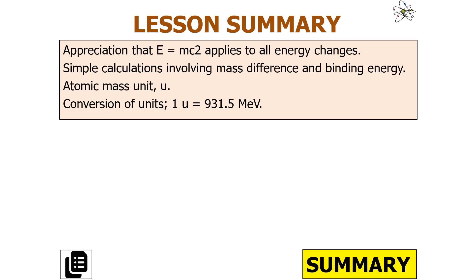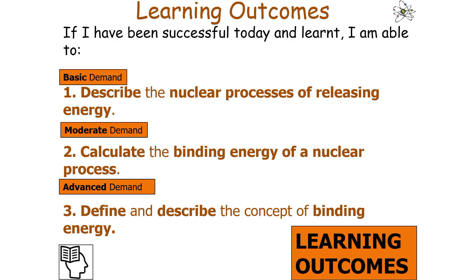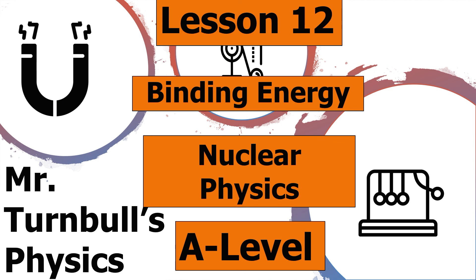In summary, from today's lesson we can appreciate that E equals mc squared applies to all energy changes, carry out simple calculations involving mass difference and binding energy, and use the atomic mass unit U with the conversion 1U equals 931.3 MeV. We can describe nuclear processes of releasing energy, calculate the binding energy of a nuclear process, and define and describe the concept of binding energy. Thank you very much for watching and have a lovely day.